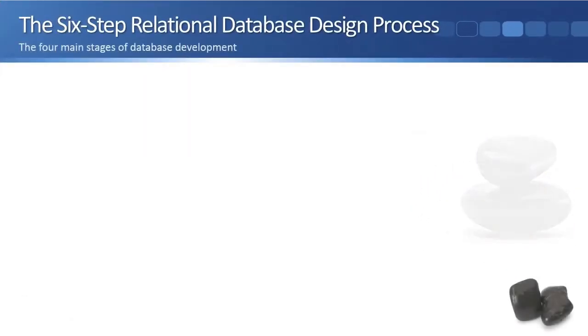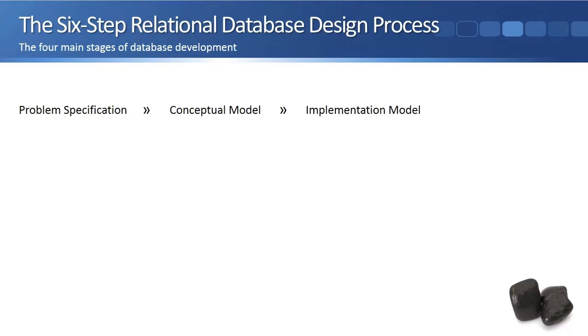There are four main stages of database development: the problem specification, the conceptual model, the implementation model, and the relational database.